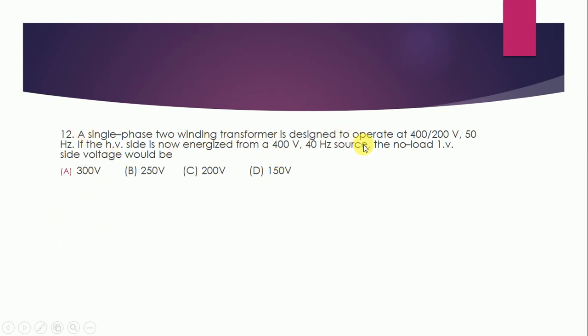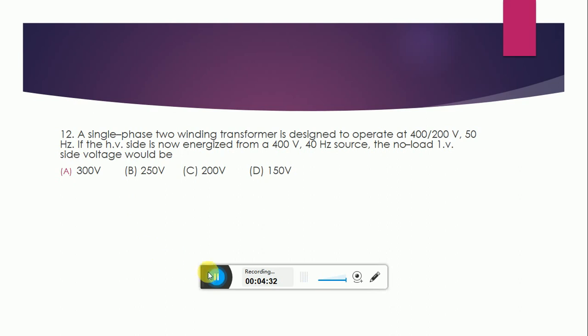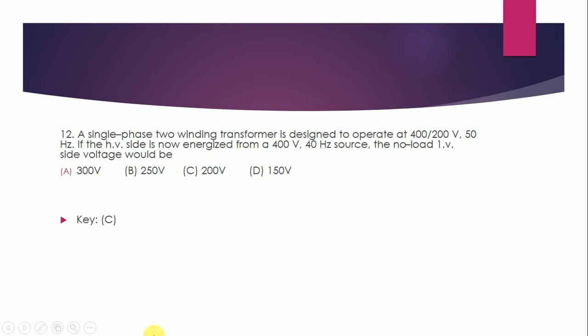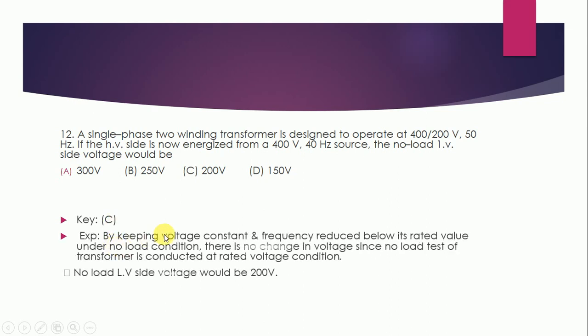A single phase 2-winding transformer is designed to operate at 400/200 volt, 50 Hz. If the HV side is now energized from a 400 volt, 40 Hz source, the no-load LV side voltage will be: 300, 250, 200 volt, or 150 volt? Correct answer is C — 200 volt. By keeping the voltage constant and frequency reduced below its rated value, under no-load condition, there is no change in voltage since the no-load test is conducted at rated voltage. Therefore, no-load LV side voltage would be 200 volt.